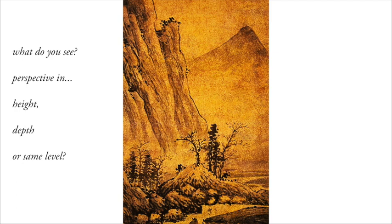Let's begin by looking at a Chinese landscape. What do you see? How do you train your eye? What is being shown in this landscape — is it height, depth, or the same level? Take a few moments and study it. Take it apart. How does your eye move through it? How is the artist establishing where you are and where the landscape is? How does the landscape move?